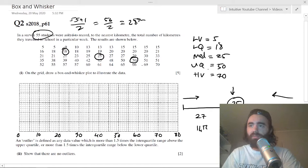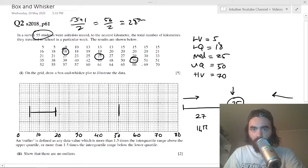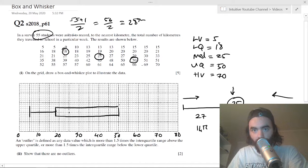The lower value is 5, then you've got your lower quartile which is 18, then your upper quartile which is 50, and your median which is 25. So you just put all these points in.